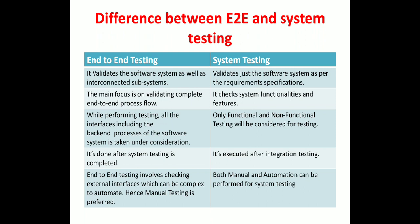End-to-end testing is done after system testing is completed, and system testing is executed after integration testing. As we have seen in previous videos, system testing follows integration testing and end-to-end testing follows system testing. The last point is that end-to-end testing involves checking external interfaces which can be complex to automate — hence, manual testing is preferred for end-to-end testing.